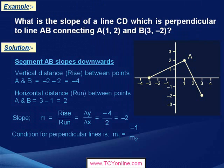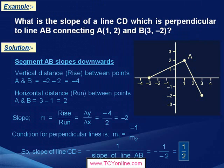And we are also aware that the condition for two perpendicular lines is that the slope of one line should be equal to the negative reciprocal of the other line. So that means slope of line CD, which is perpendicular to line AB, is simply the negative of the reciprocal of the slope of line AB, which is equals to negative 1 over negative 2. This gives us 1 over 2, which is simply 1 half. So we can say that slope of line CD is 1 half.